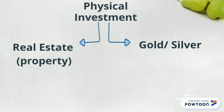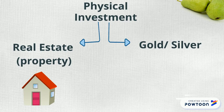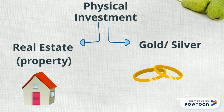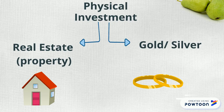The second group is real assets. The first asset class in this is real estate, which is anything like land, homes, offices, go-downs, etc. And lastly, there are commodities such as gold or silver. So to recap, we have four asset classes: fixed income, equities, real estate, and gold.